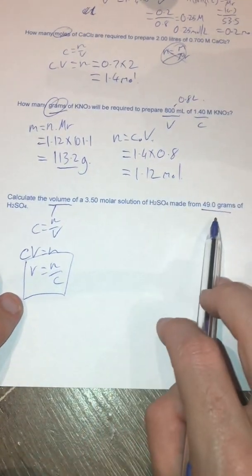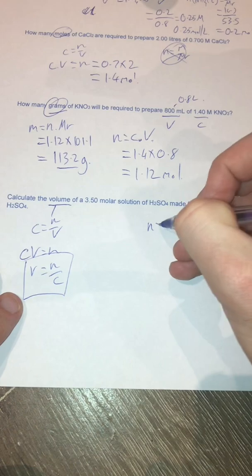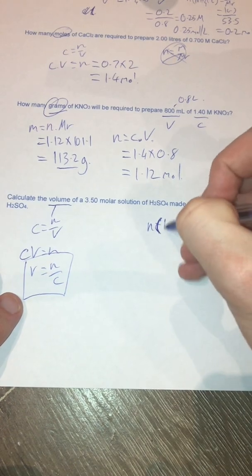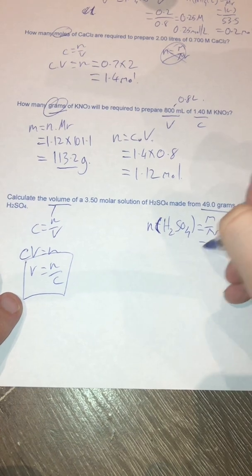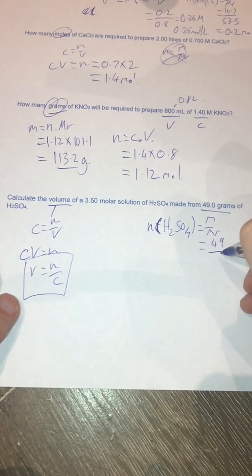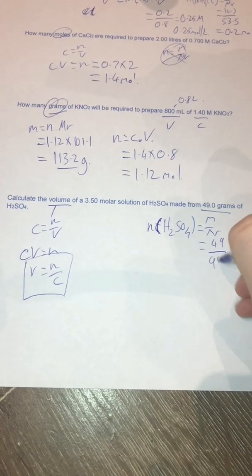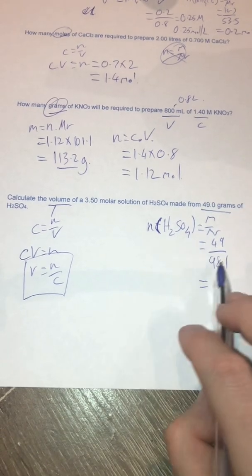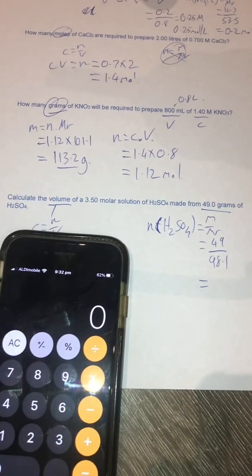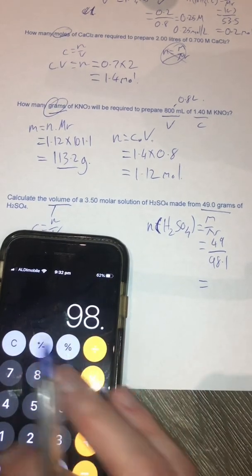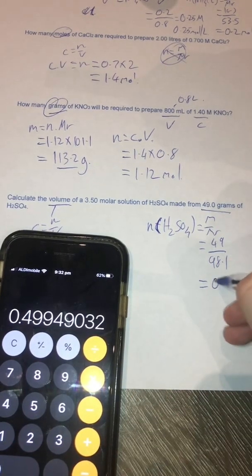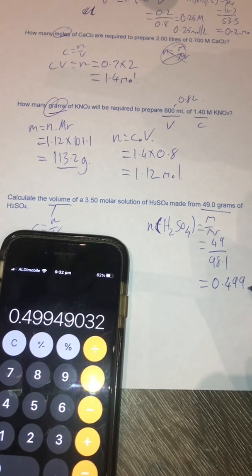Number of moles, I don't have, but I've got mass. So I've got my molar mass of sulfuric acid. So I bang it back into my calculator here. 49 divided by 98.1 gives me 0.499 mole.